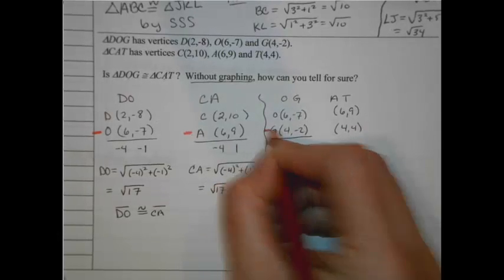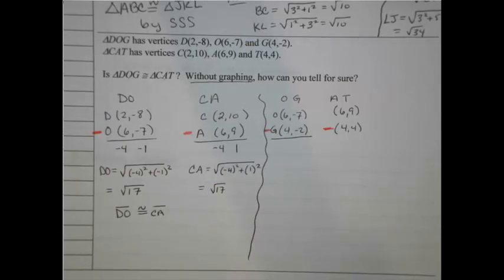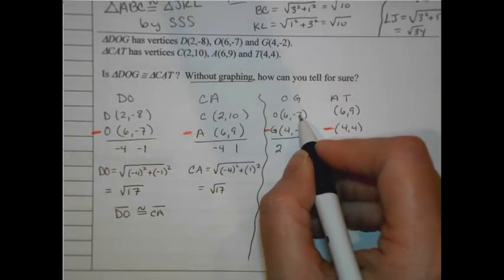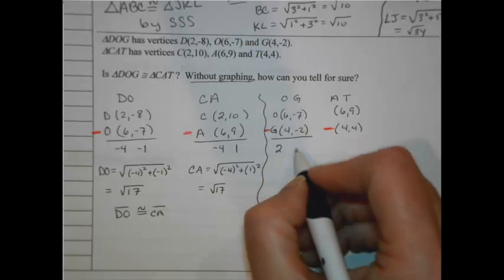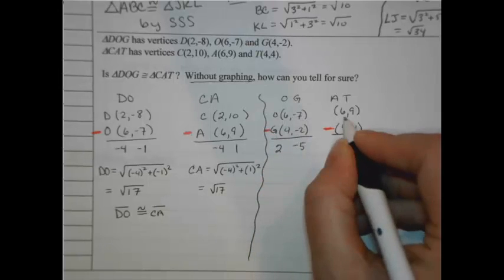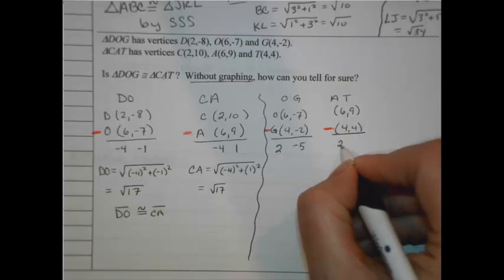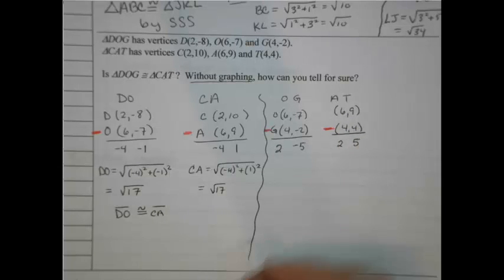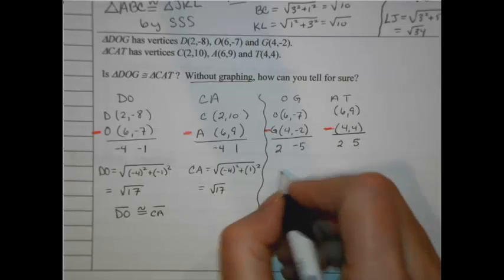Okay, so I'm going to subtract these. And let's see what our results are. 6 minus 4 is 2. -7 plus 2, that's going to be -5. And on the difference here, I get 6 minus 4 is 2, and 9 minus 4 is 5. So I'm thinking I'm going to get these to match also. But let's prove it.